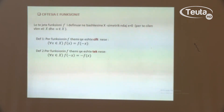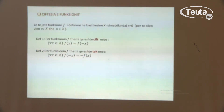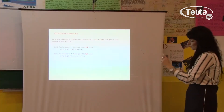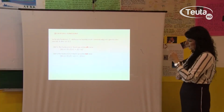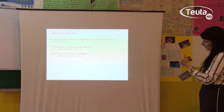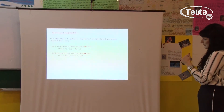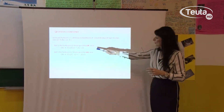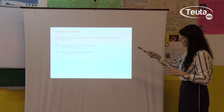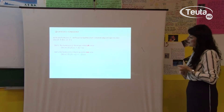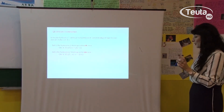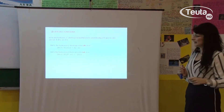Kurse për funksionin f themi që është tek, në qoftëse për çdo x nga zona e përkufizimit, vlen që f(-x) është i barabartë me minus f(x). Të analizojmë këto dy shprehje. Në shprehjen e parë shohim se edhe për x edhe për -x kemi të njëjtën vlerë të funksionit, kurse në shprehjen e dytë kemi vlera të njëjta, por me parashenjë të kundërt.